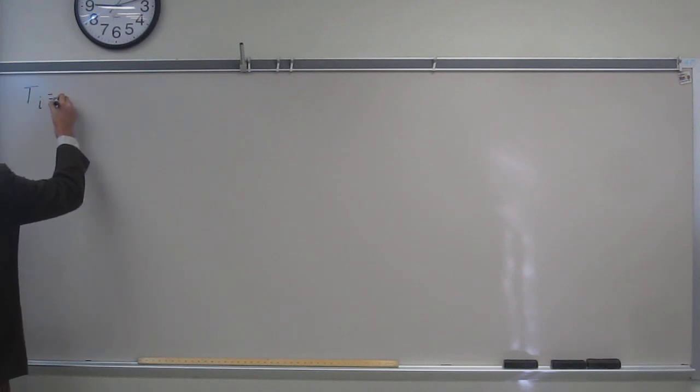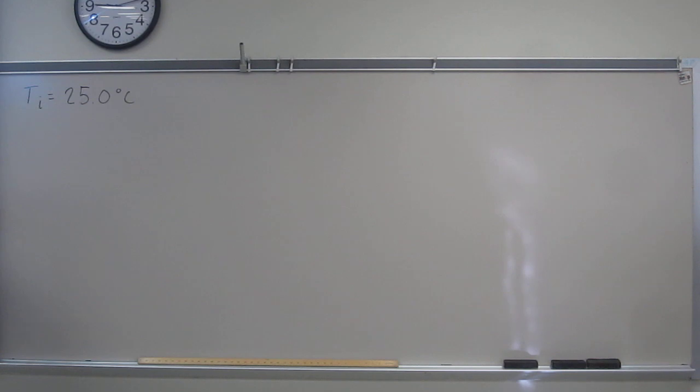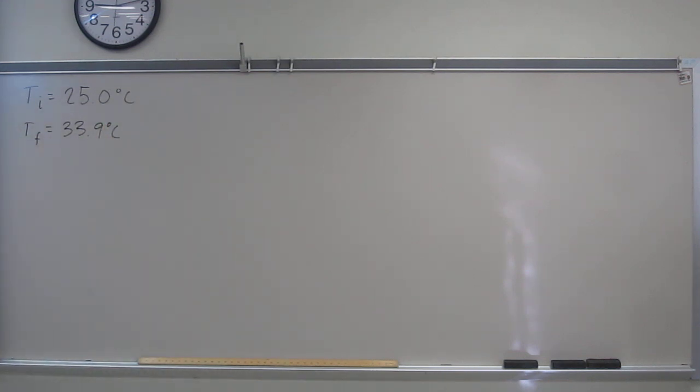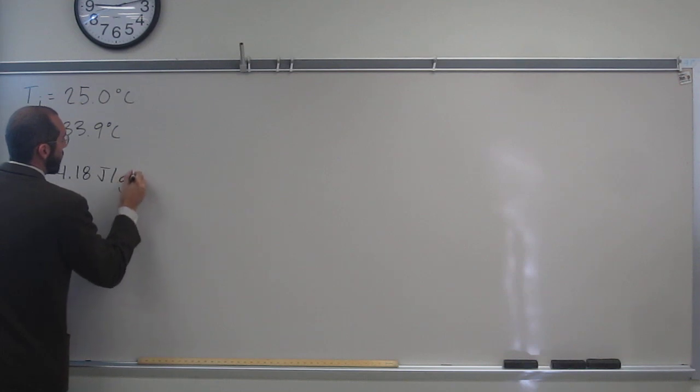So it gave us the initial temperature, Ti will say 25.0 degrees Celsius. And then it says Tf, the final temperature, is 33.9 degrees Celsius. It gives us the specific heat of the solution, 4.18 joules per gram degree C.